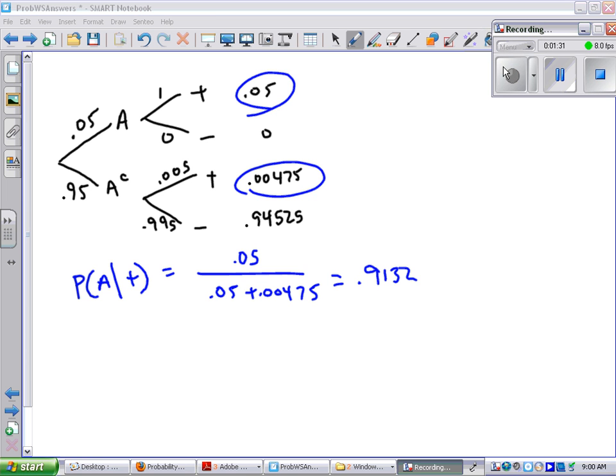So Part B says, what if more than 5% of the population actually had it? If that 0.05 was some bigger number, would that 0.9132 be bigger or smaller? Well, if the 0.05 is a bigger number, like say it's 0.1, then that formula would become 0.1 over 0.1 plus something smaller than 0.00475. So clearly that 0.9132 is going to go up. For Part B, it's higher.